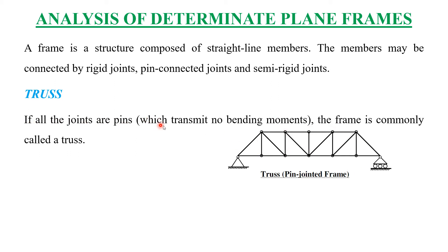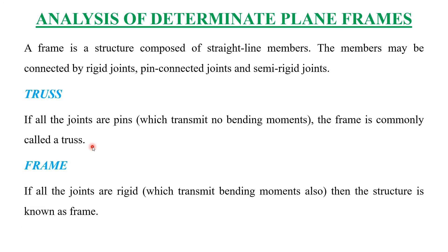If all joints are pins that transmit no bending moments, the frame is commonly called a truss. The basic difference between a truss and a frame is the type of joints. If all joints are pins, the structure is a truss. Frames can transmit bending moments, but trusses can never transmit bending moments.